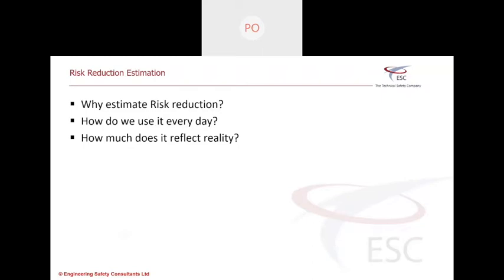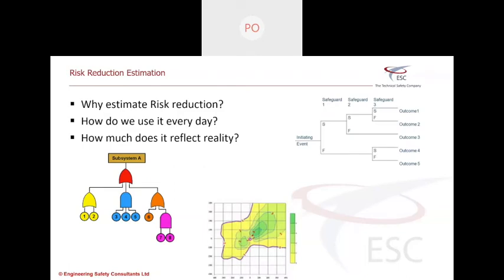So when we do our analysis and we look at risk reduction, we're going to do the same thing and we are going to ask the same question. So why do we estimate risk reduction? How do we use it every day and how much does it reflect reality? So many of you would have been involved in studies like layer protection analysis, fault tree analysis, and you would have seen a number of estimates, event trees that give you a number that you then compare to the previous number. And you say, yeah, those two numbers meet. We're good. And that is typically what the risk target and the risk reduction parameters are used for to give us that level of assurance that we're meeting the target. But actually meeting that target means a lot of things.